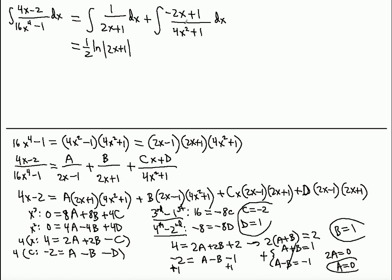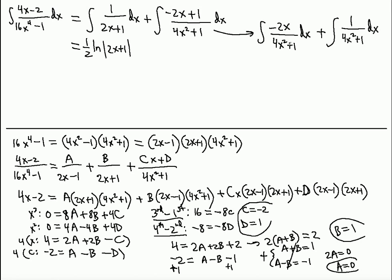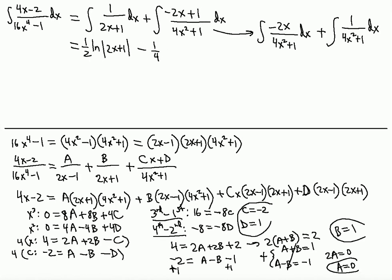For the remaining part, we split the integral into -2x/(4x² + 1) dx plus 1/(4x² + 1) dx. For the first piece, use u = 4x² + 1 so du = 8x dx. Then -2 divided by 8 gives -1/4, yielding -(1/4) ln(4x² + 1) — no absolute value needed since 4x² + 1 is always positive.